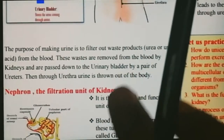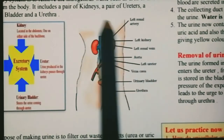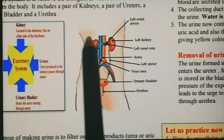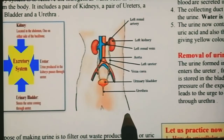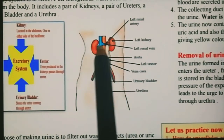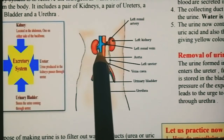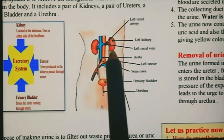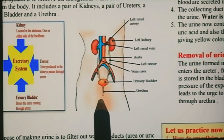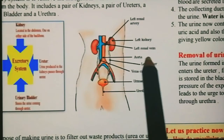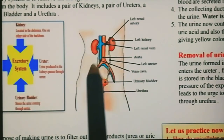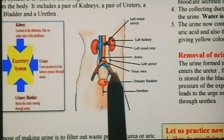Draw a labelled diagram of the excretory system of human beings. यहाँ से book से भी बना सकते हैं, और यह labelled diagram यहाँ से draw कर सकते हैं। Diagram बिल्कुल neat होना चाहिए और clear दिखाएं। Kidney, renal artery, renal vein, renal pelvis — इसके बाद ये tubes चाहिएं: ureters और urethra। Label करना जरूरी है। Color भर सकते हैं तो और better हो जाता है, differentiate हो जाता है कि कैसे-कैसे organs काम करते हैं।